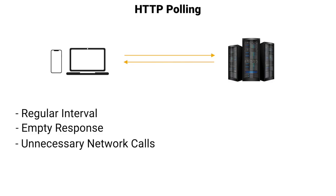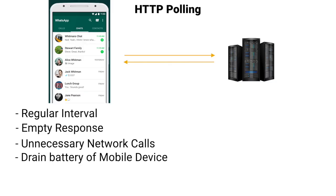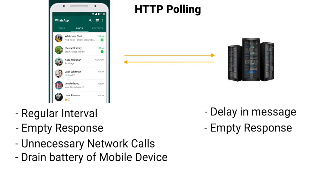Let's take a look at the WhatsApp example for a chatting use case. We can consider the client as the WhatsApp Android or iOS app and the server as our WhatsApp server. The client will be making requests at a regular interval, say every two seconds. There might be cases where we have no new messages and we keep polling, draining the battery of the user's mobile device. For sending messages from client to server we can use HTTP request, but for getting new messages from the server this is not good — first, there is a delay of two seconds, and second, most of the time the response will be empty.